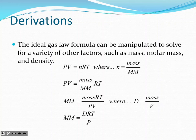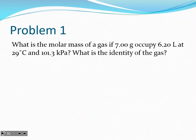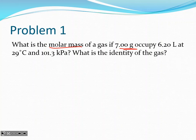Problem: what is the molar mass of a gas if 7 grams occupies 6.2 liters at 29°C and 101.3 kPa? We want the molar mass equation that includes mass — not the density version. First, convert temperature: 29 + 273 = 302 K.